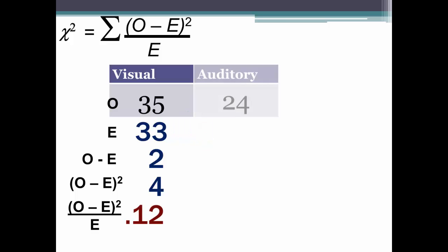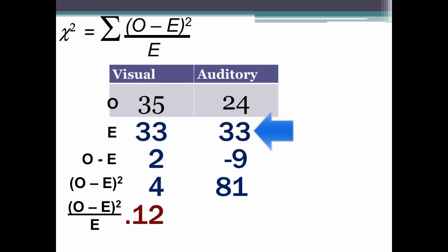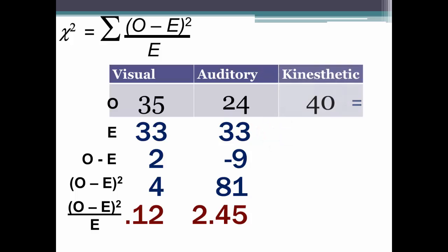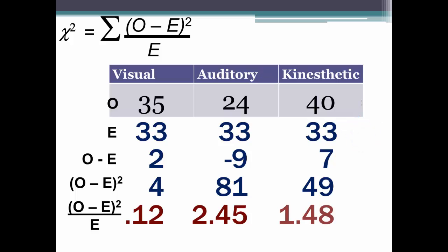Now let's do it for auditory, where the observed is 24. We have 33 again for the expected, but when we subtract the expected from the observed we get negative 9. Following the formula, we square that and come up with 81. We take that 81 and divide it by the expected value of 33, and we end up with 2.45. On to the last column for kinesthetic — expected is again 33. When subtracted from the observed of 40, that yields 7. 7 squared is 49, and 49 divided by 33 gives 1.48.